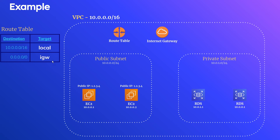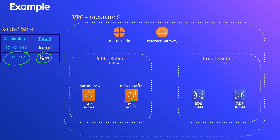So when an instance tries to communicate with the public internet, instead of going directly, the route table rule says to pass through the internet gateway. The machine routes through the internet gateway, the internet gateway goes out to the public internet, contacts whatever resource you want, a response comes back, NAT translation happens at the internet gateway level, and then the response is returned back to the instance. That's how outbound internet connection works from the public subnet perspective.